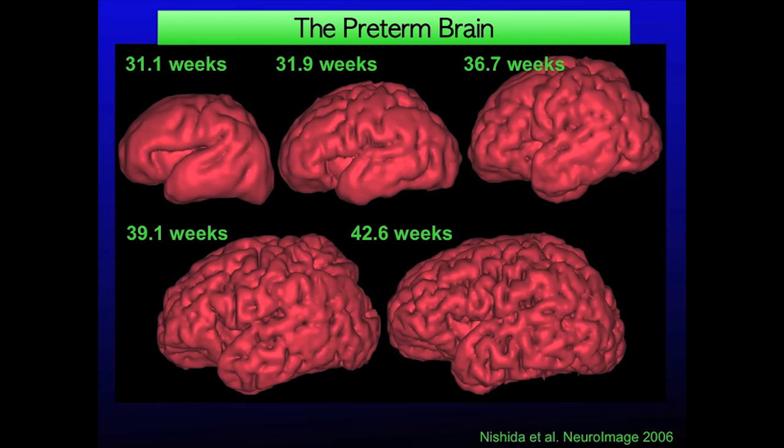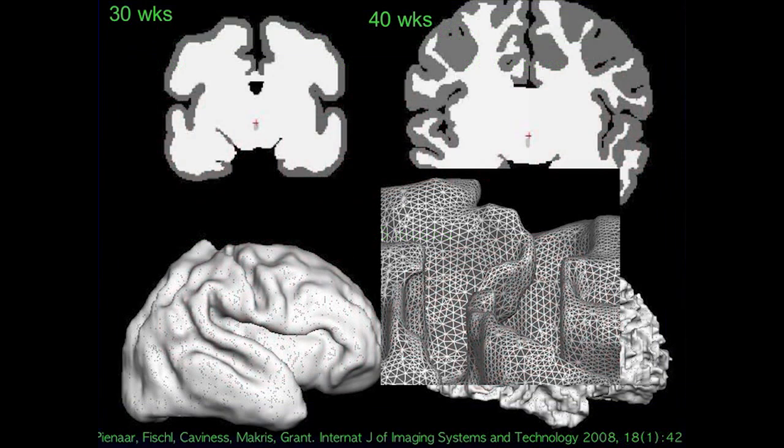Complex folding is extremely important. It is what makes us thinking, conscious human beings. To better understand this complex folding, we can take these surfaces and make them into a computer model. We don't just want to see folding — we want to measure it. Measurements allow us to characterize development and understand how abnormalities emerge.